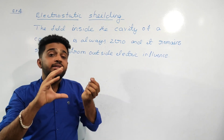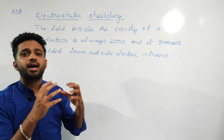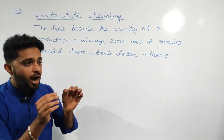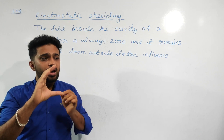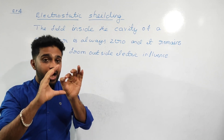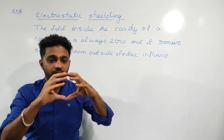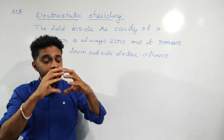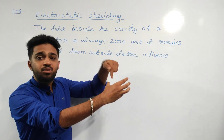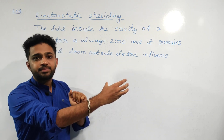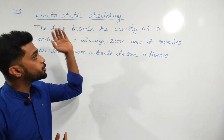In that cavity, sensitive electric equipment is placed. Any external electric field cannot affect what is inside the cavity. The equipment inside is protected and safe from external electric fields — this is electrostatic shielding.